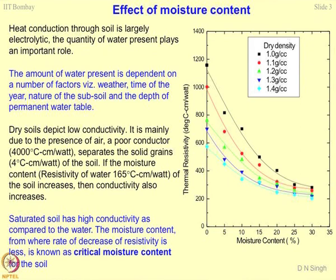Dry soils will depict low conductivity or very high resistivity, mainly due to the presence of air, which is a poor conductor. The resistivity of air is 4000 degree centigrade centimeter per watt, while the resistivity of solid soil grains is about 4 degree centigrade centimeter per watt. The resistivity of water is assumed to be 165 degree centigrade centimeter per watt. As you increase moisture in dry soil, resistivity drops, and beyond a certain point becomes constant at the resistivity of water.